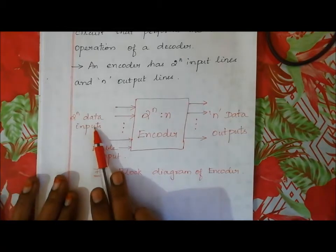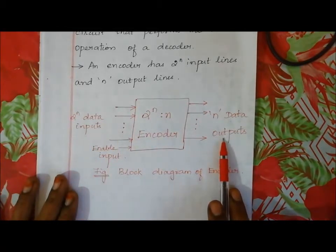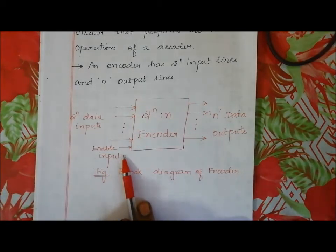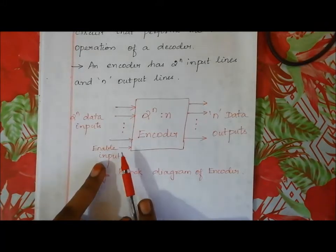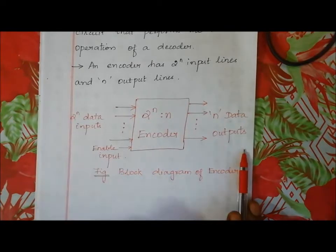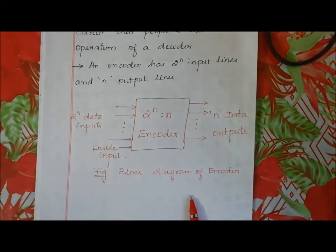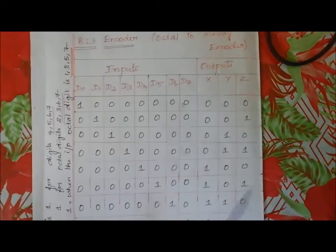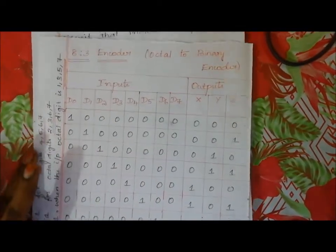So with 2^n inputs we get n output lines. There is also an enable input, which is used to trigger the operation. When enable is active, the output is produced. This is the block diagram of the encoder.